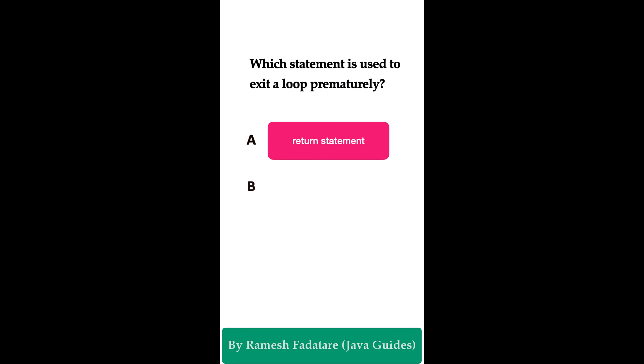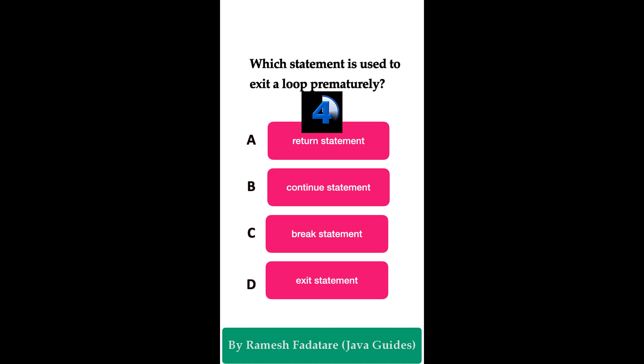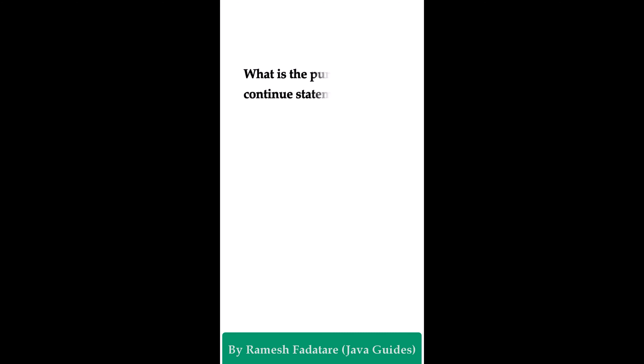Which statement is used to exit a loop prematurely? Option A: return statement. Option B: continue statement. Option C: break statement. Option D: exit statement. The correct answer is break statement. The break statement exits the loop — whether it is a for loop, while loop, or do-while loop. The break statement is also used in switch-case statements. It terminates the loop and transfers execution to the statement immediately following the loop.